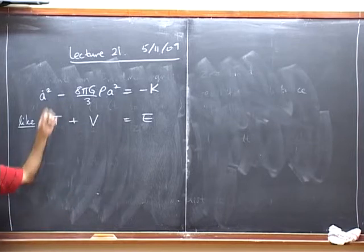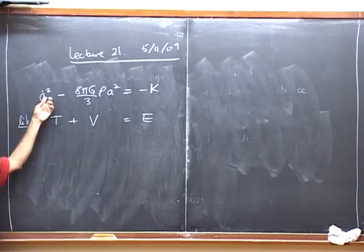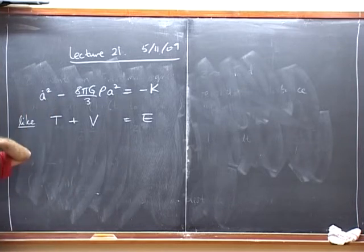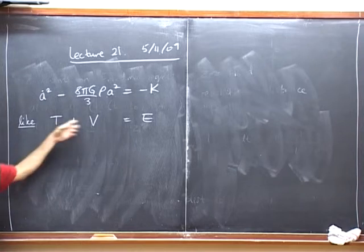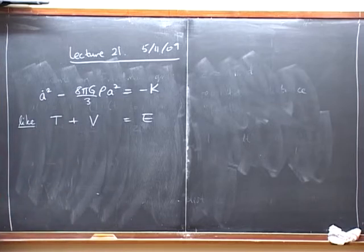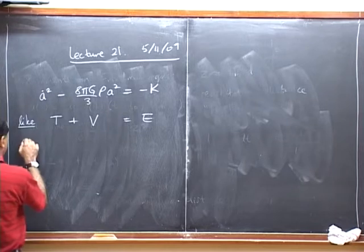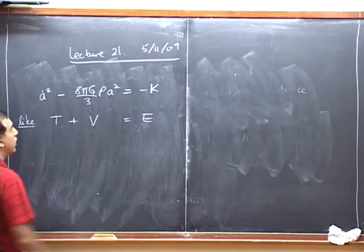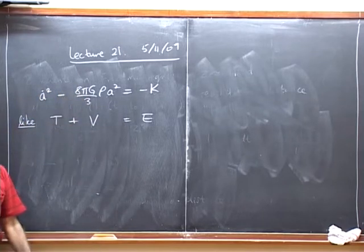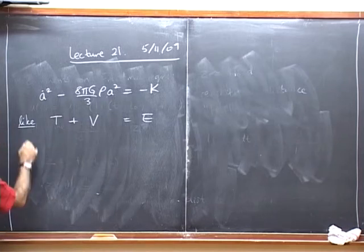This is proportional to some sort of potential, and this equals a constant. So it looks like T plus V equals E - an equation we have been solving since childhood. We know all these situations: when a particle is bound in a potential, when it is free to escape to infinity. When the particle is bound in the potential, it means A-dot has to go through zero, or the universe has to stop expanding. When the particle is free to escape to infinity, A-dot will not go to zero. This analogy may help us, and actually it is better than a purely mathematical analogy.